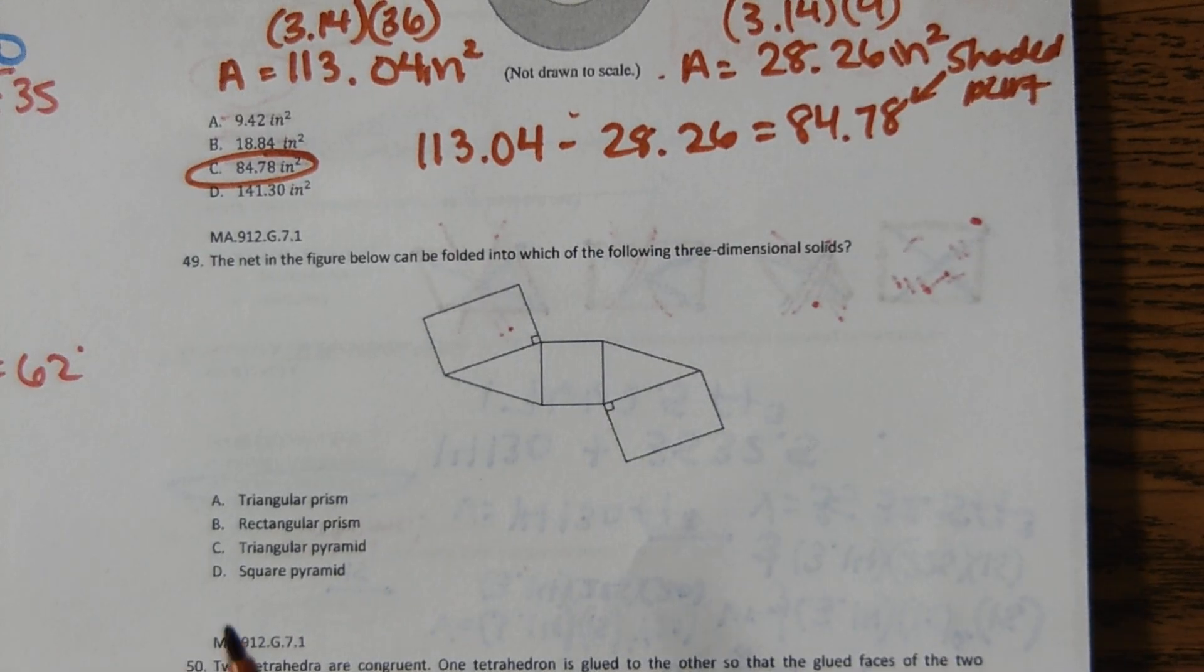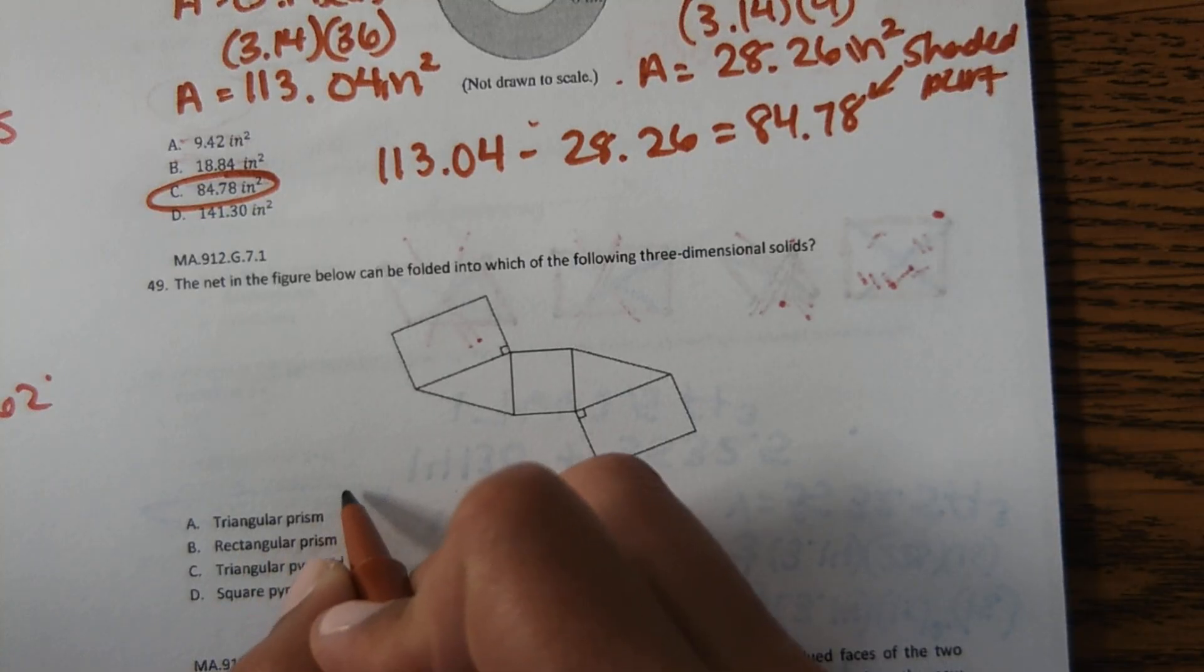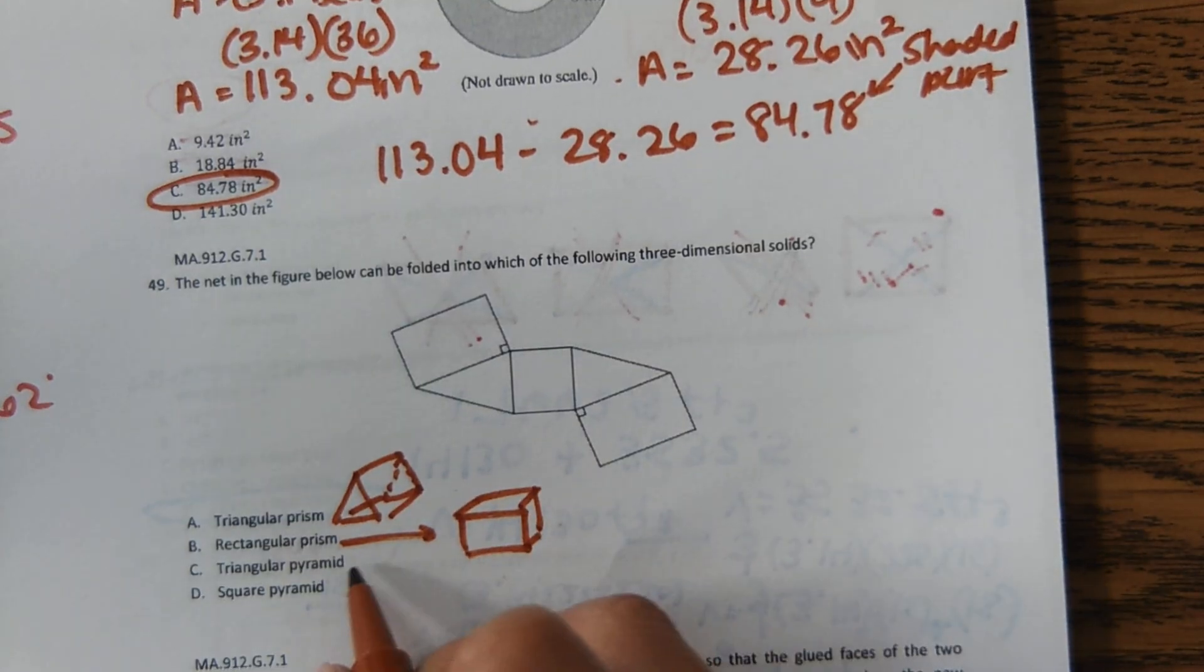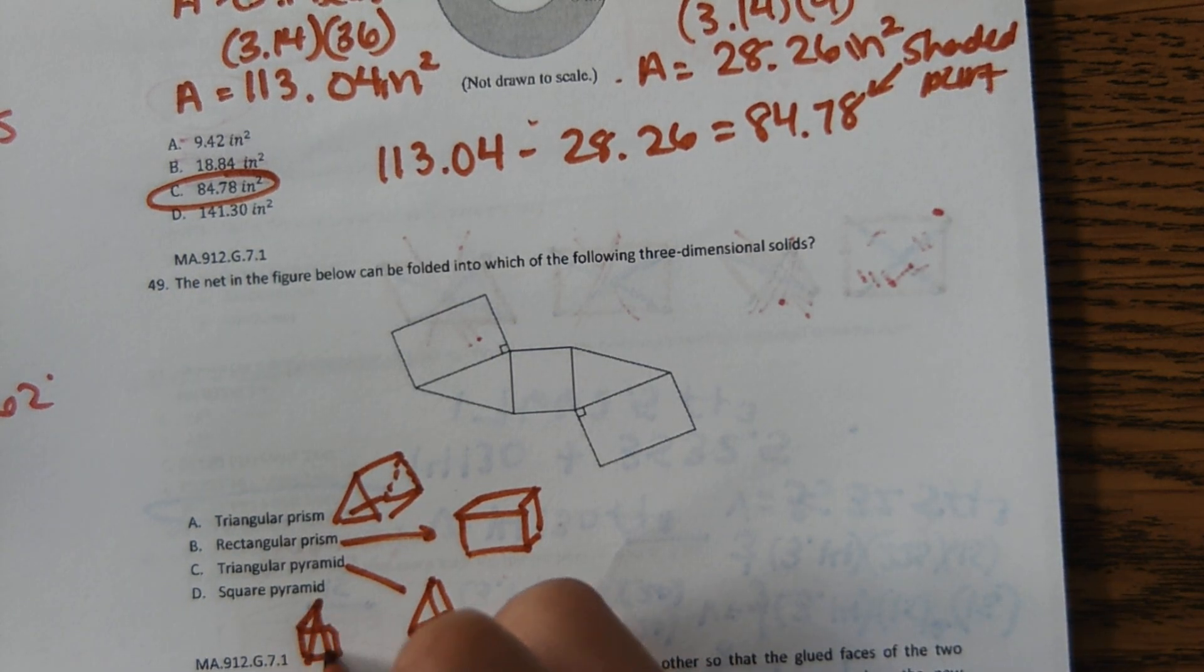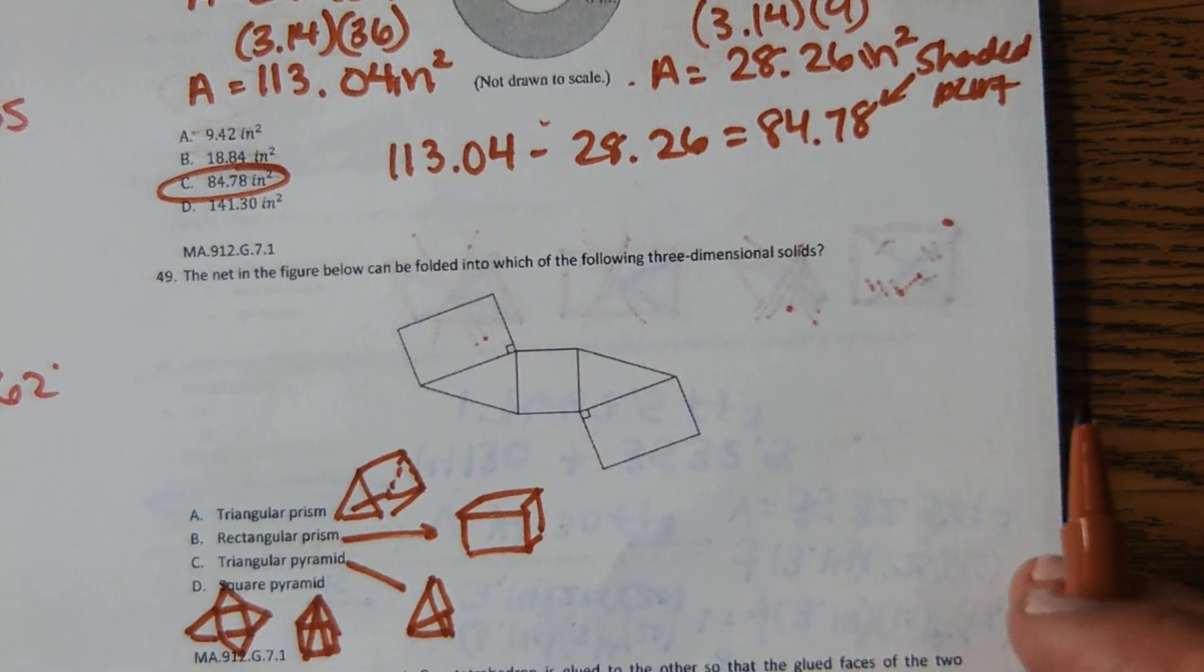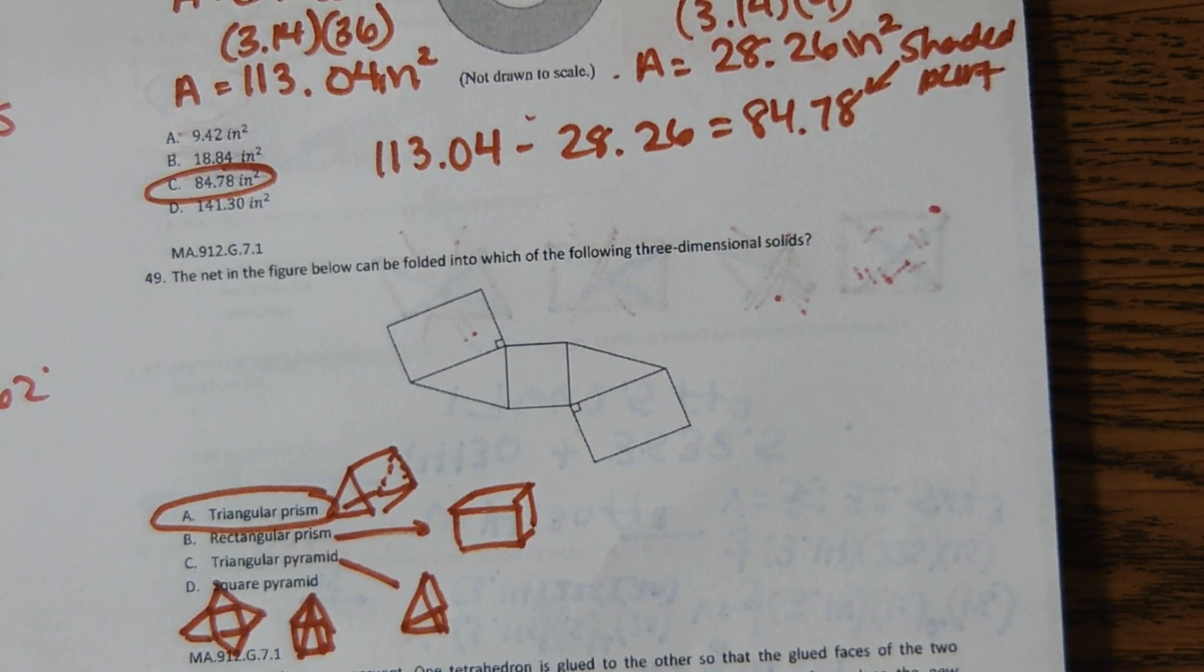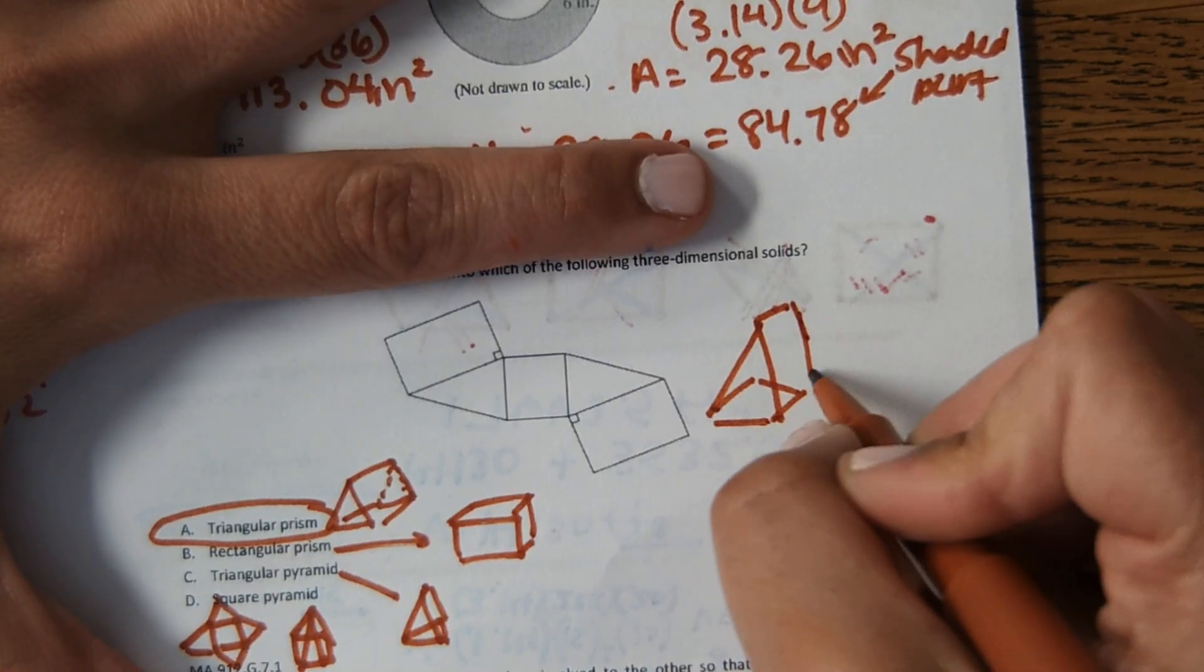The next one, it says the net in the figure below can be folded into which of the following three-dimensional solids. So we're trying to figure out which 3D shape. Just reviewing the shapes that are listed here. A triangular prism would have a triangular base, like there and here, and then it would have rectangles that go all the way around. A rectangular prism would be kind of like a tissue box. And then a triangular pyramid would have a triangle base and then triangles that go all the way around. And then a square pyramid would have a square base and then triangles that go all the way around. So based on that, what we have here is a triangular prism. So we have the front triangle and the back triangle, and then rectangles that go all the way around it. So like if you were to fold it up.